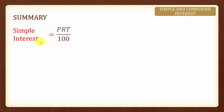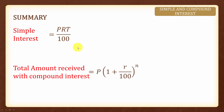In summary, the formula for simple interest is equal to P times R times T over one hundred, and this formula finds the interest. On the other hand, the compound interest formula finds the total amount, which is given by P multiplied by (1 plus R over one hundred) to the power of N. If you want to find the total amount for simple interest you need to add P, and if you want to find the interest for compound interest you subtract P.